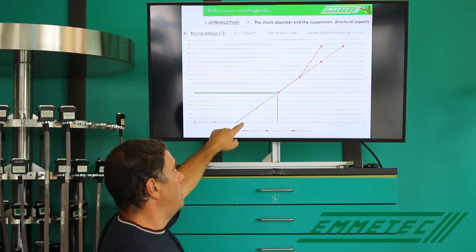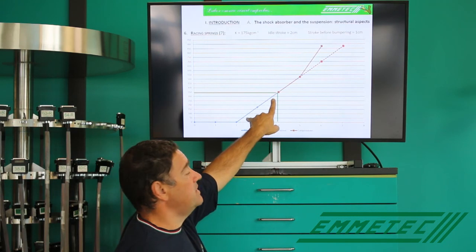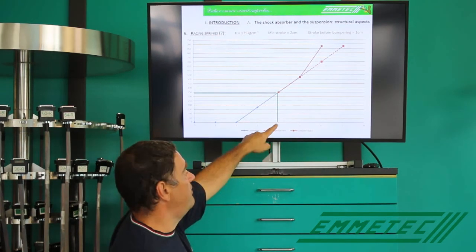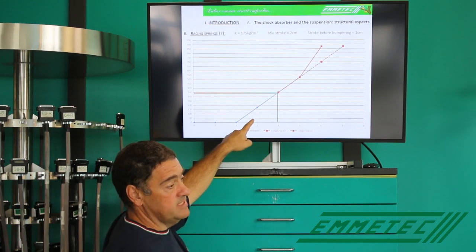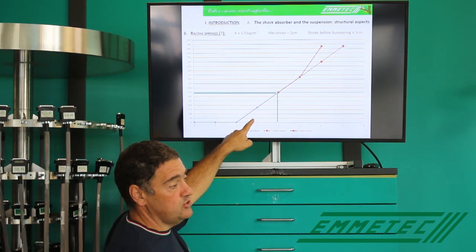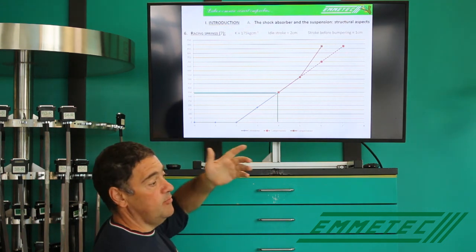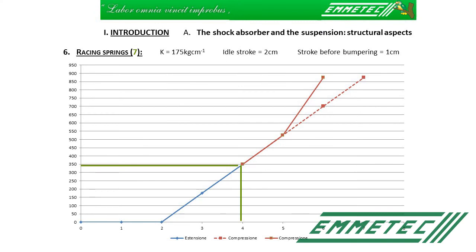So now, instead of having two centimeters of stroke in rebound, we have four. During the first two centimeters, the spring is pushing the rod down. Then, when it is completely extended, the shock absorber extends itself thanks to the weight of the unsuspended masses.